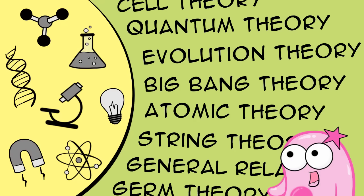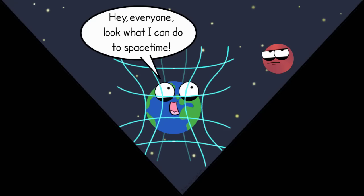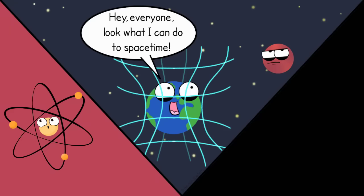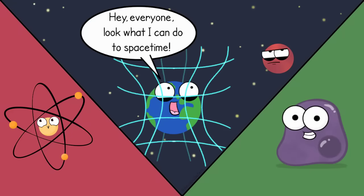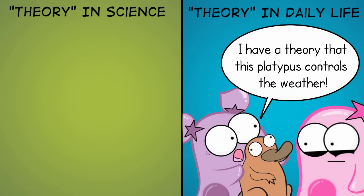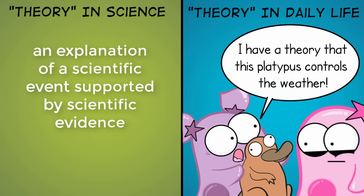There are a lot of amazing theories in science: the general theory of relativity, atomic theory, the cell theory. One thing we want to point out about a scientific theory is that it's a lot different from how you might use the word theory in your daily life. A scientific theory is not an educated guess. A scientific theory is an explanation of a scientific event supported by scientific evidence.